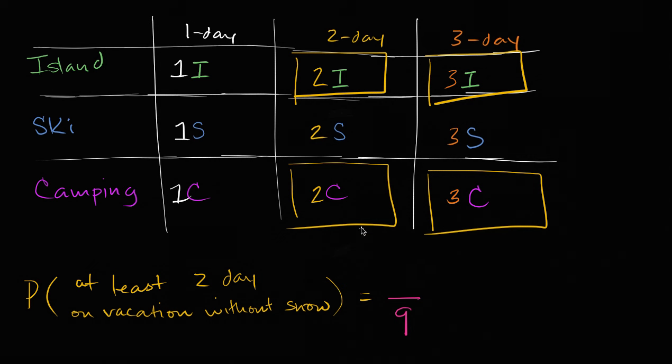So four of the equally likely outcomes satisfy this constraint. So you have a four-ninths probability of getting a vacation that keeps you away from snow for at least two days. Hopefully you found that fun and useful for the next time that you are on some type of strange game show.